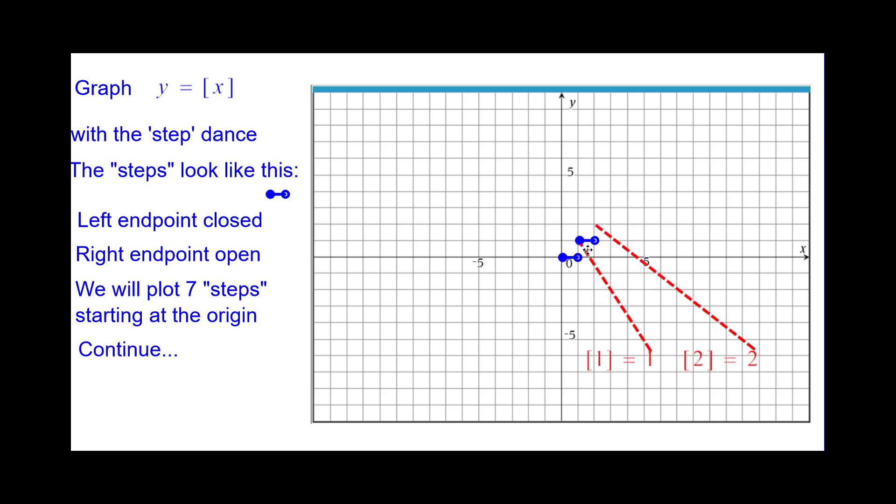Continuing, greatest integer of 1 is 1, so 1 comma 1 is closed. But the greatest integer of 2 is 2, so it's going to jump up to the next step.